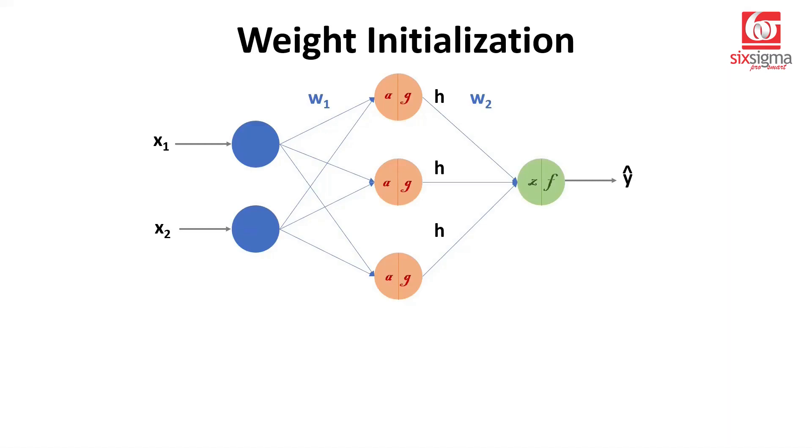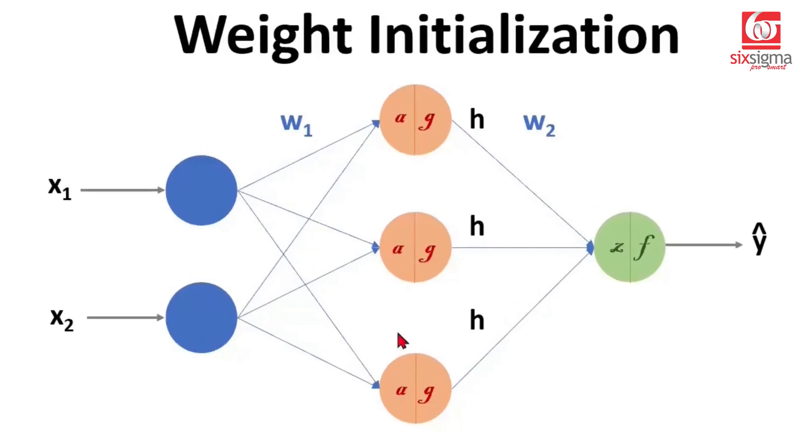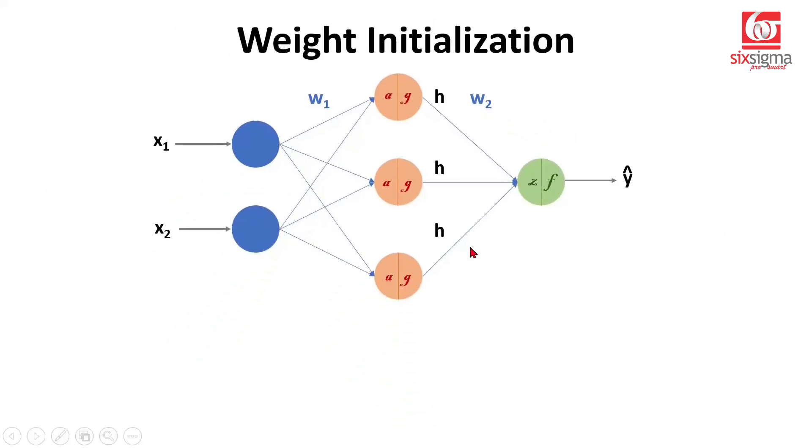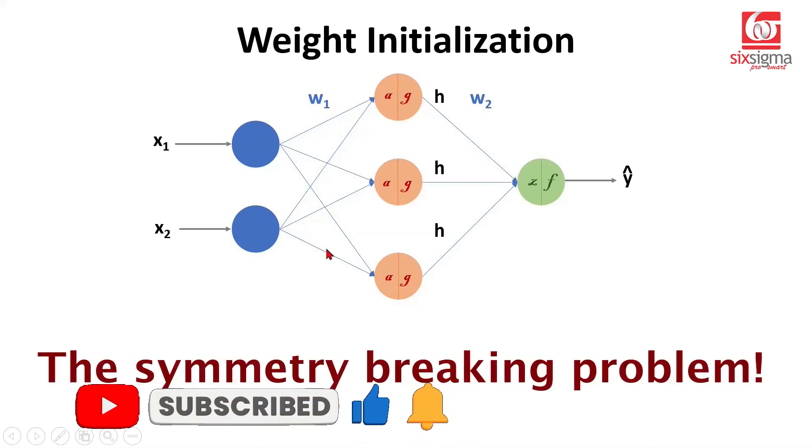So in this video, we continue to talk about weight initialization. What we've covered so far is what happens when all these weights are initialized equally. We took a specific case where between the input neurons and the hidden neurons, we chose one set of weights, which was all W1s. All these connections were W1s. And between the hidden neurons and the output neurons, we chose all the weights to W2s. We were able to figure out that even when we backpropagate, while W2s may be updated, all these connections will be weighed equally. And the problem is the symmetry breaking problem.